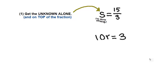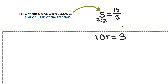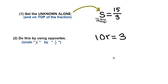Now if we have an equation like this where we have 10r equals 3, we're solving for r, but we can see that r is not alone. We look over here on the left side of the equation and we see there's a 10 there — the number 10 that we have to get rid of. How do we get rid of the 10 to make r alone? You get it alone by using opposites.